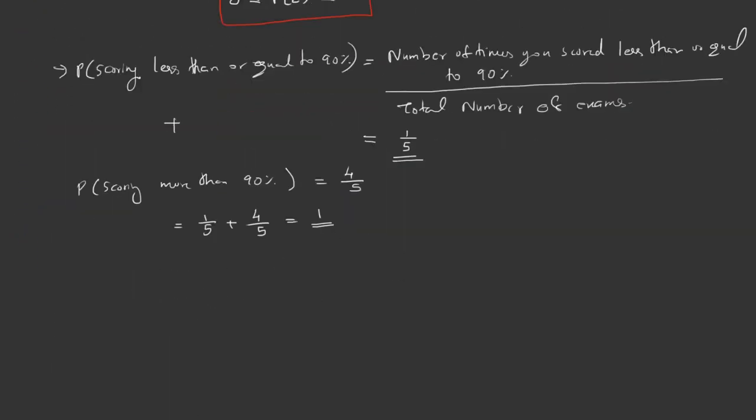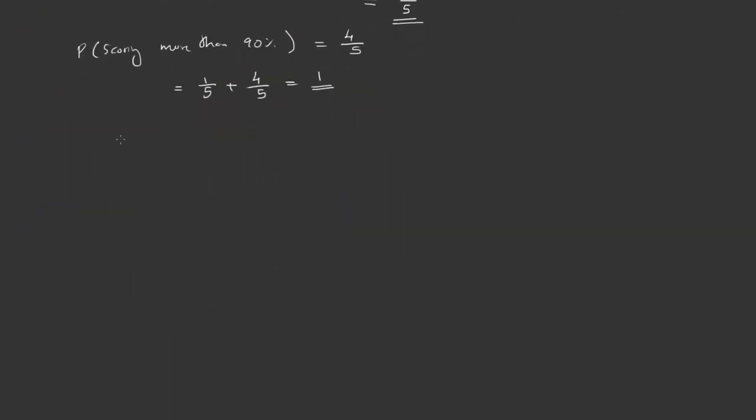Therefore, we can generalize for n events. If E1, E2, E3, up to En cover all events in the trial, then P(E1) plus P(E2) plus P(E3) and so on, plus P(En) equals one.